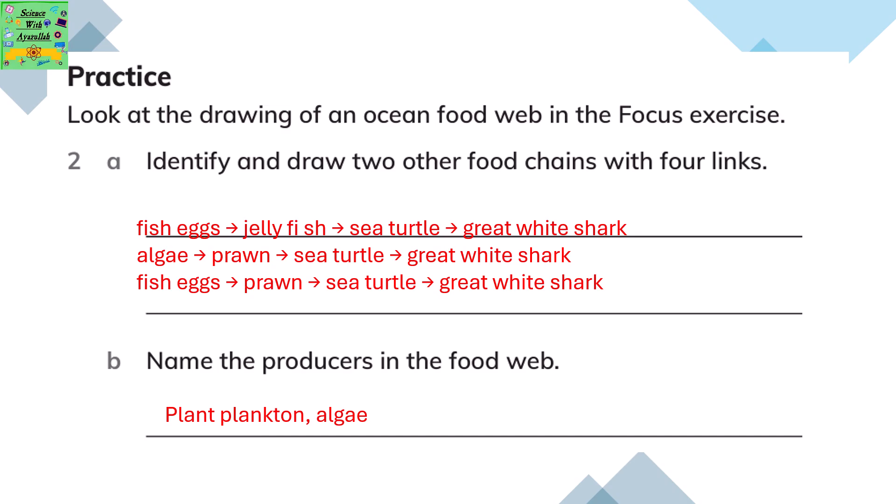Look at the drawing of an ocean food web in the focus exercise. Identify and draw two other food chains with four links. The two other food chains could be: fish eggs eaten by a jellyfish, which is eaten by a sea turtle, and then consumed by a great white shark.